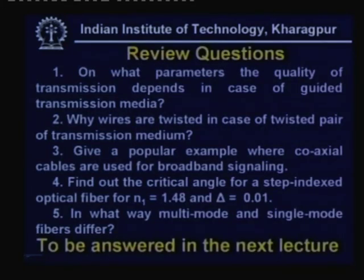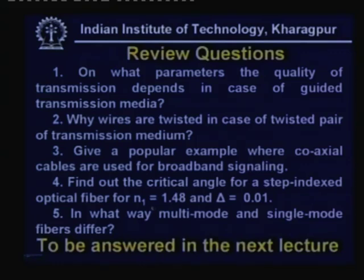Here are the review questions: (1) On what parameters does the quality of transmission depend in case of guided transmission media? (2) Why are wires twisted in case of twisted pair transmission medium? (3) Give a popular example where coaxial cables are used for broadband signaling. (4) Find the critical angle for a step-index optical fiber for N₁ = 1.04 and Δ = 0.04. (5) In what way do multimode and single-mode fibers differ? These are the five questions to be answered. Now let us look at the answers to the questions given in the previous lecture.